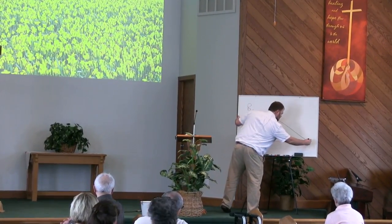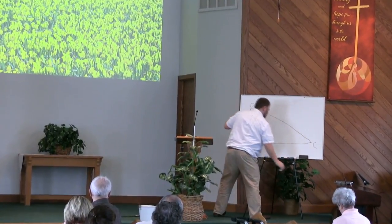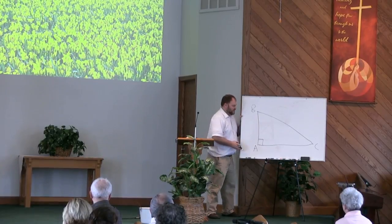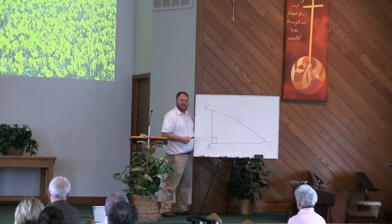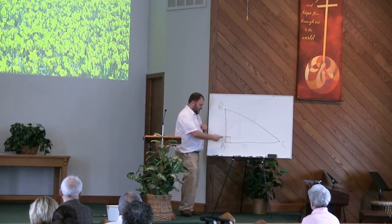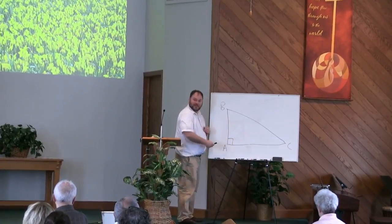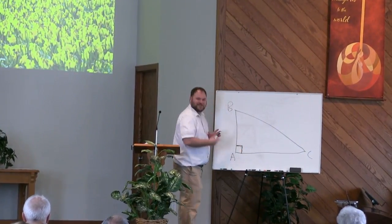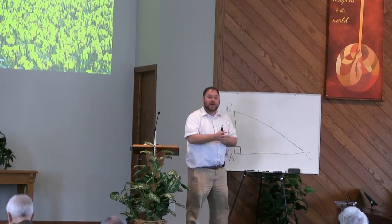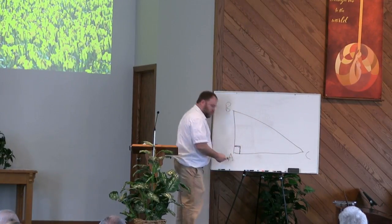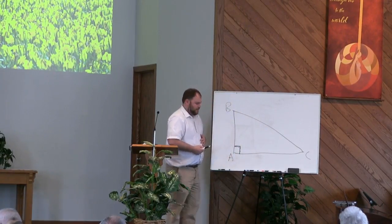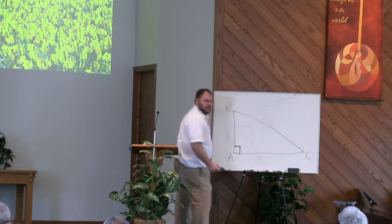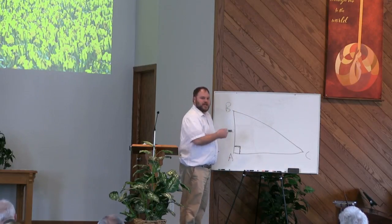Now, I know we have probably several mathematicians here today, so we might draw in their wisdom a little bit with this. But what do we see here? A right triangle, because you even have that little space here that's indicating a 90-degree angle. But if you were at point A and you wanted to get to point C, what would be the quickest way you could get there?